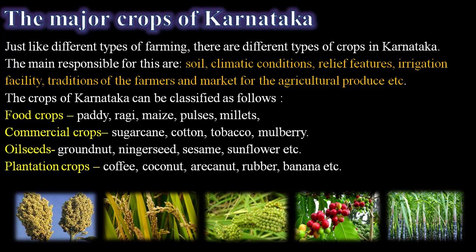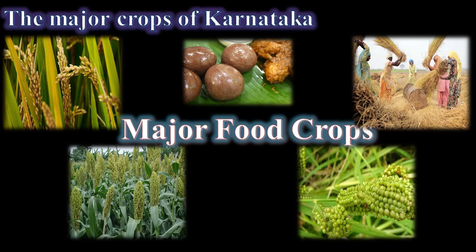Food crops include paddy, ragi, maize, pulses, and millets. Commercial crops include sugarcane, cotton, tobacco, and mulberry. Oil seeds include groundnut, niger seed, sesame, and sunflower. Plantation crops include coconut, rubber, and banana. In addition to these, different types of horticultural crops and floriculture are also there. Now let us study about the major crops of Karnataka.